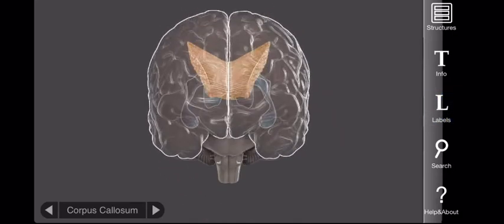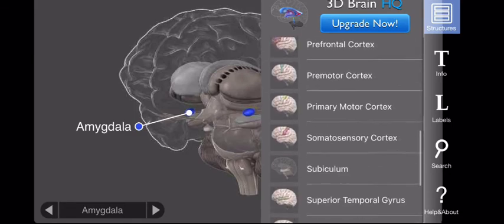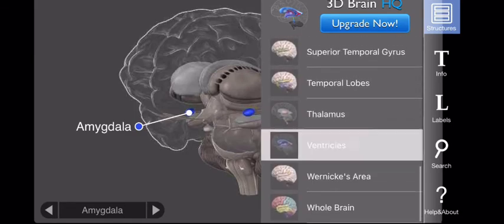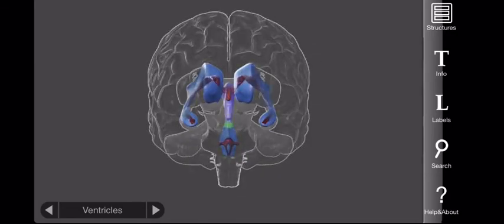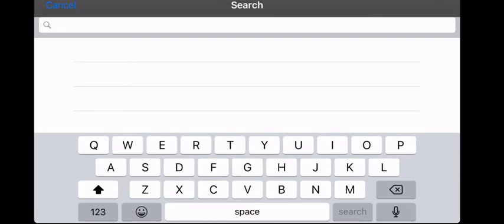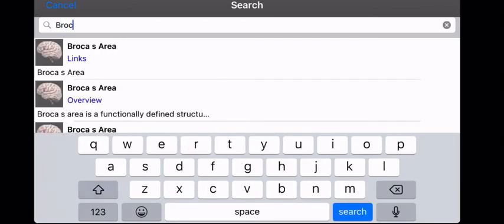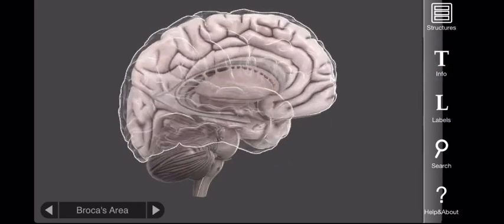This is my number one brain app because you can see everything internally and externally, manipulate the brain, and even search for different brain structures like Broca's area. And it will take you directly to that area.